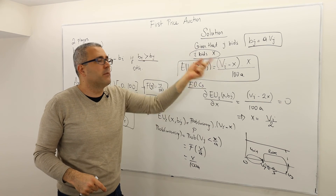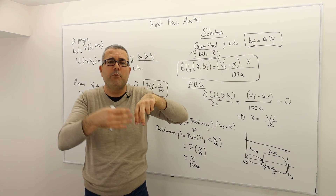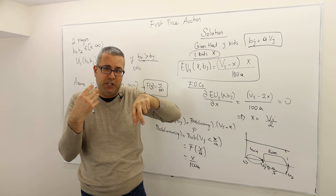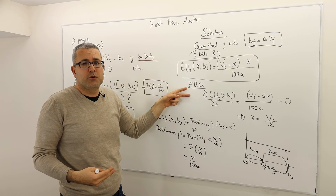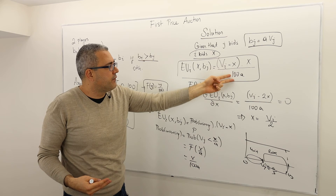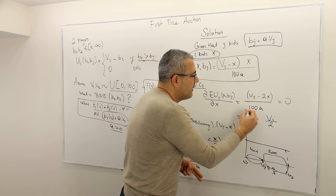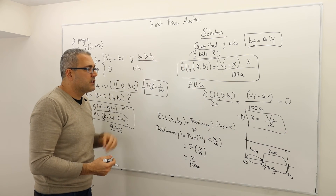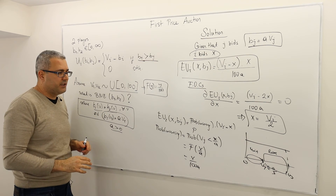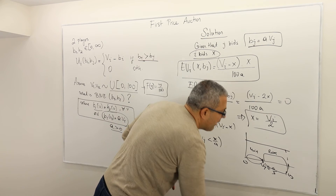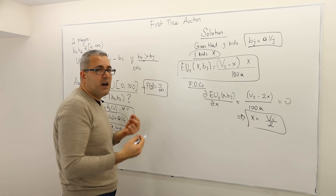What X value maximizes my expected utility? In the Bayesian Nash equilibrium, fixing my opponent's strategy, I best-respond by choosing X that maximizes my expected payoff. I take the derivative of the expected payoff function with respect to X, set it equal to zero, and solve for X. Doing that gives the result that my optimal bid is V_I divided by 2.